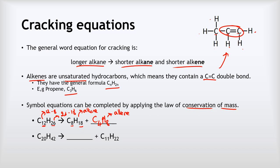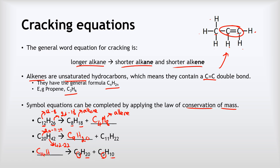Let's look at another example: C20H42 making something and C11H22. The number of carbons in the unknown substance is 20 minus 11, which gives us nine carbons. The number of hydrogens is 42 minus 22, which gives us 20 hydrogens — so the unknown is C9H20. And the last type we might have is where we know both products: say we're making C9H20 and C5H10, so what must the starting molecule have been? We've got nine carbons in one and five in the other, so we add those together to get 14 carbons. We do the same with the hydrogens: 20 plus 10 gives 30 hydrogens. So the starting molecule was C14H30.